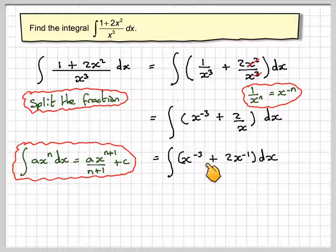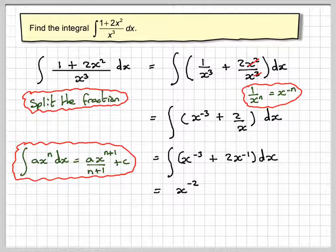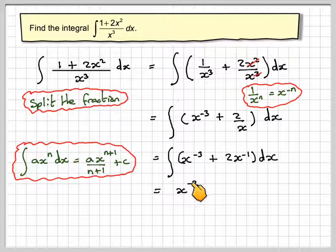So applying that to this, we're going to get x^(-2), because -3 + 1 gives -2, and then we need to divide by that new power, which is -2.